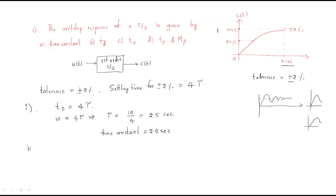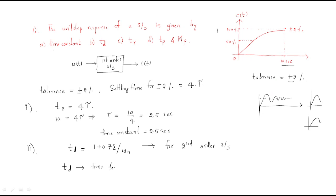Next, find the delay time. For a second order system, delay time equals (1 + 0.7ζ) / ωn. But this is a first order system, so that formula is not applicable here. Delay time is defined as the time required to reach 50 percent of the final output value.